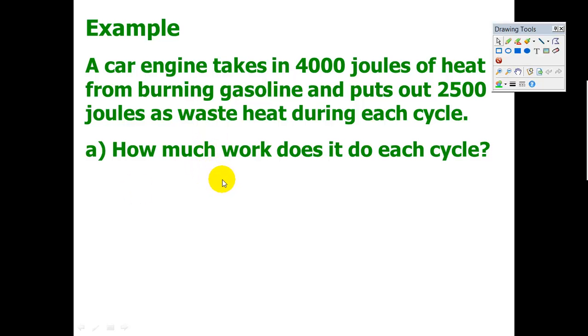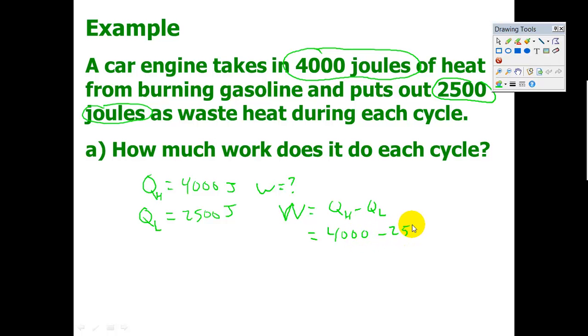Let's take a look at how we can work through the solution. I'm going to circle 4,000 joules. That's Q because it's heat. I also see 2,500 joules. I have two Qs, so I need to think about how I distinguish between them. The heat coming in is always more than the heat going out. We'll call that QH, and the other one QL. That's the waste heat. How much work was done? We can use our equation: work equals QH minus QL. Very simple math, just arithmetic. Subtracting 4,000 minus 2,500 is 1,500 joules. This is how much work is being done each cycle.